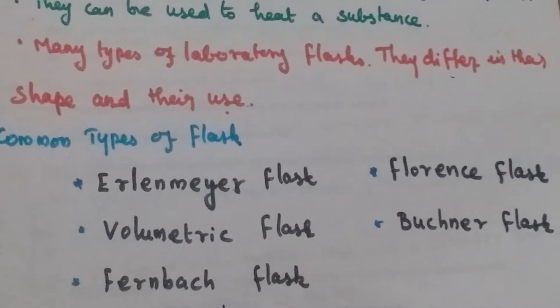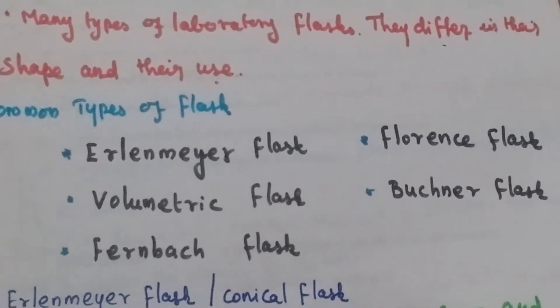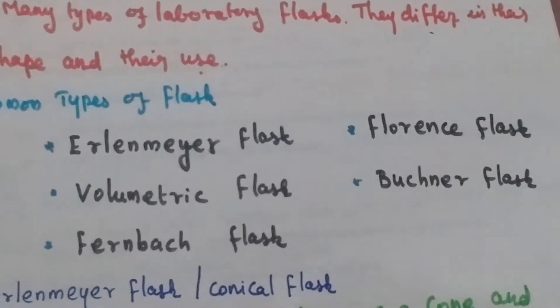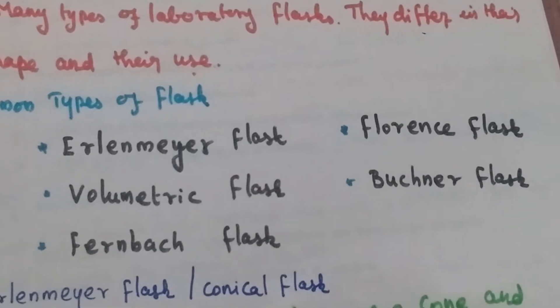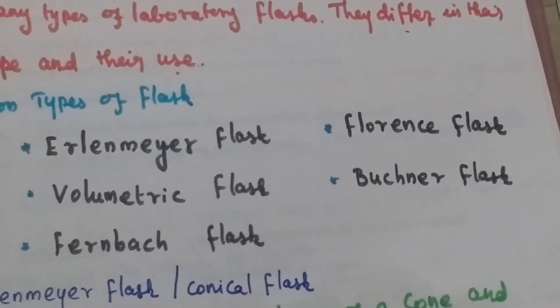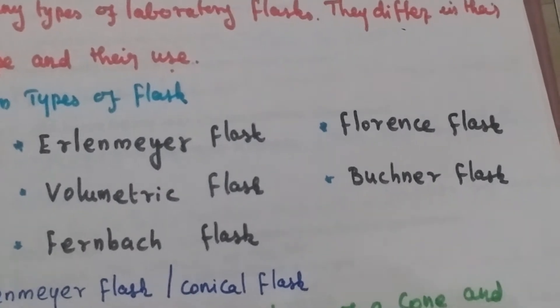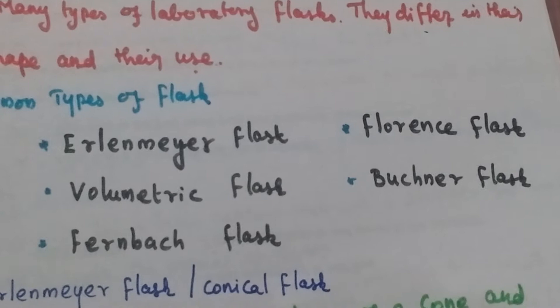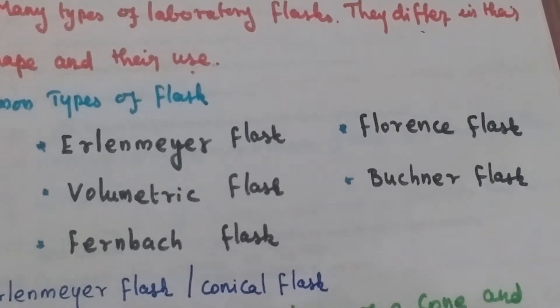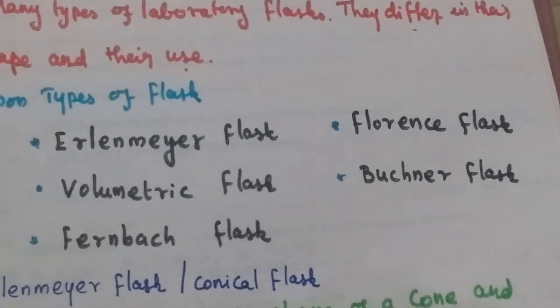Now we will discuss different types of flasks. The main types are: Erlenmeyer flask, volumetric flask, Fernbach flask, Florence flask, and Buchner flask. We will discuss one by one.